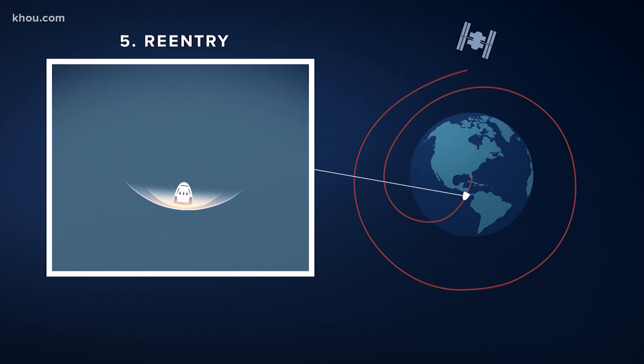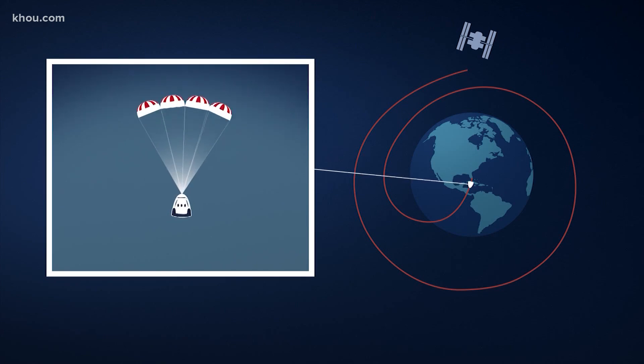This is where the Dragon's heat shield plays a critical role in protecting Dragon and the crew members inside. After this fiery stage of re-entry, four parachutes will deploy.